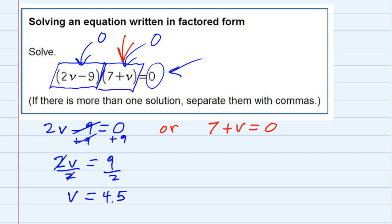Solving that one for v, I would subtract the 7 over to the other side. That would cancel, leaving v equals negative 7.